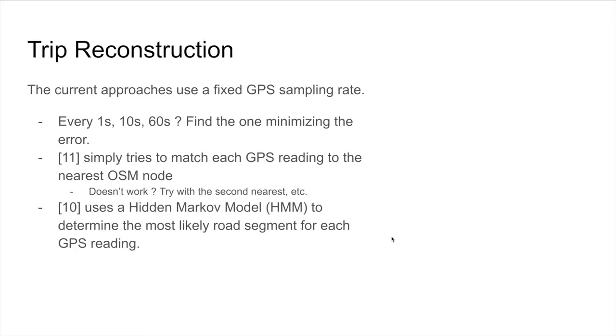What you can do is actually try to match each GPS reading to the nearest ways, which is often based on OpenStreetMap. If it doesn't work or produces a result that's highly unlikely, they will simply try with the second nearest ways to see if it produces a somewhat better result. Others can also use Hidden Markov models.